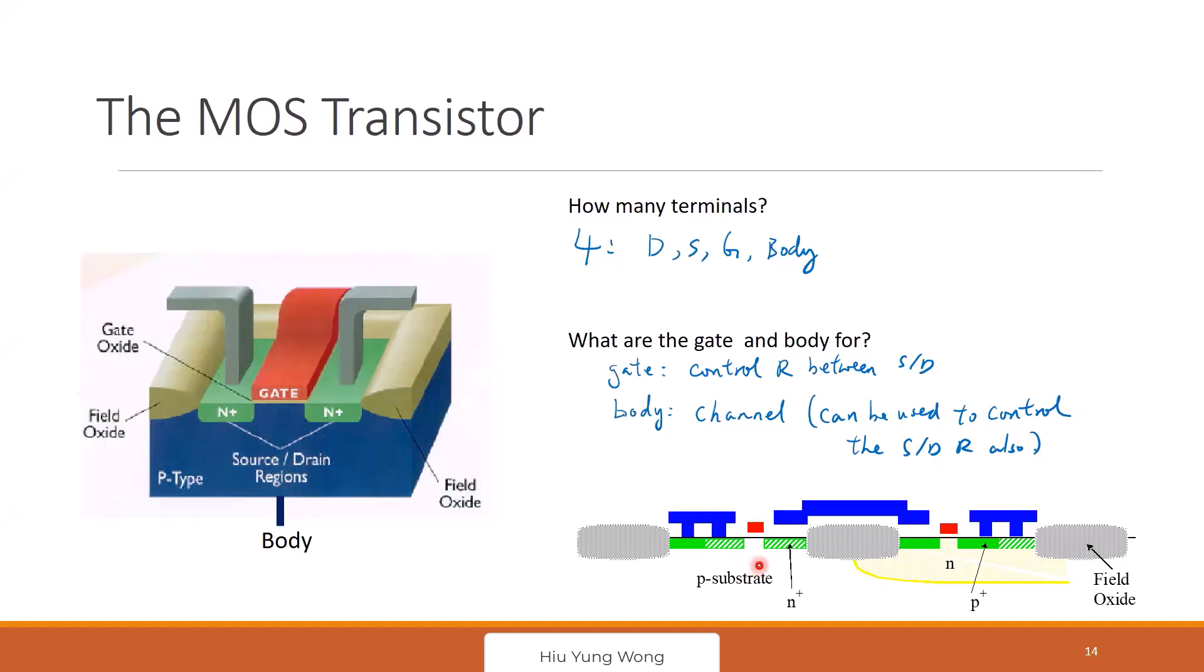And now let's look at what we did last time about a cross-section. This is the source, drain, gate, body. For MOS, source, drain, gate, body. Its body is inside the well. Is that okay?